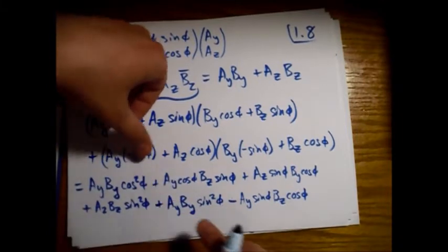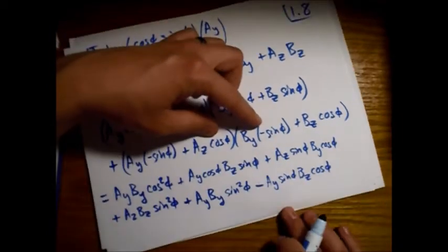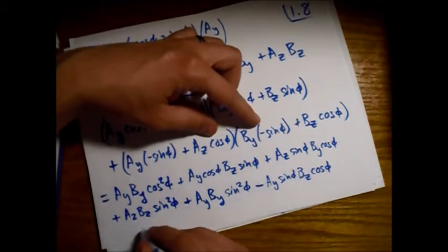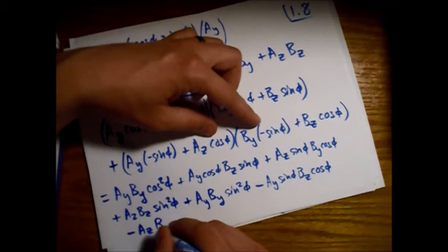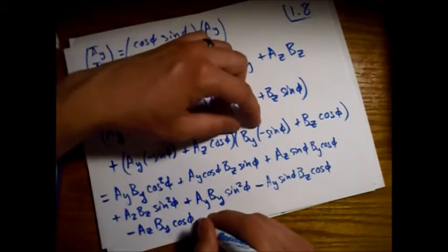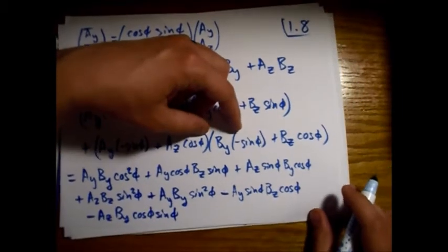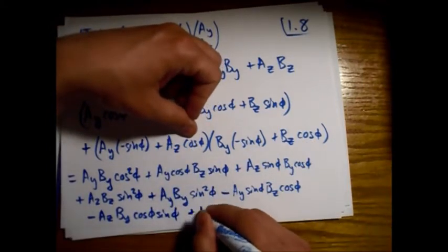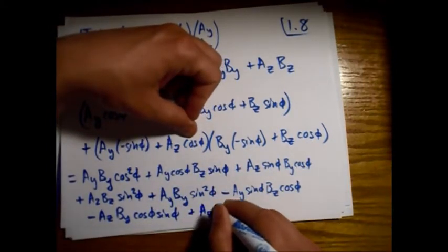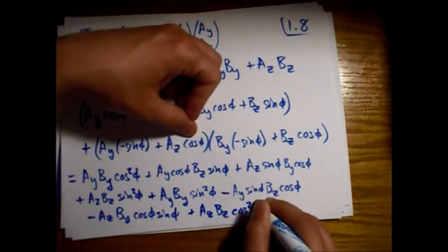Alright, that's done with this term now. Now we'll move to these two. So, minus A_z B_y cosine φ. Yeah, I kind of did this in a different order this time. Hopefully it's still clear. Okay, now this one times this one. Plus A_z B_z cosine squared φ.